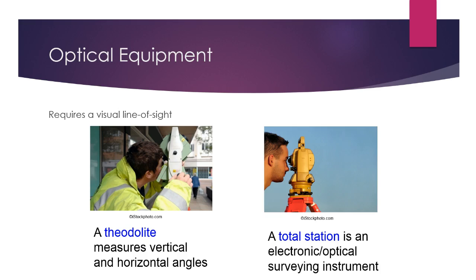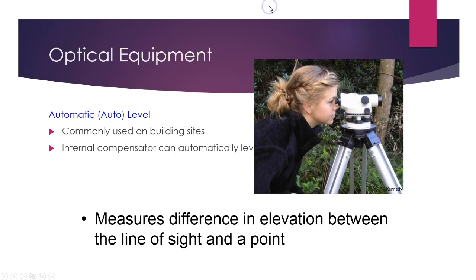On the right is a total station, which is both electronic and optical surveying equipment. It still works by line of sight but does some of the math for you, whereas with a theodolite you have to do the math yourself. Theodolites are rarely used now - most surveyors have a total station or something even more advanced.